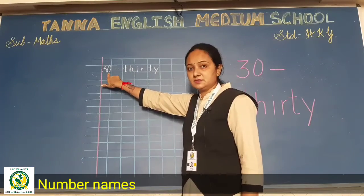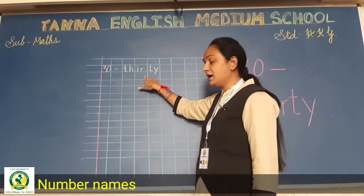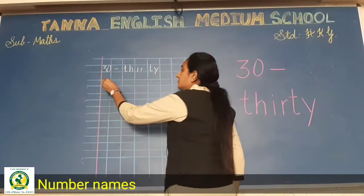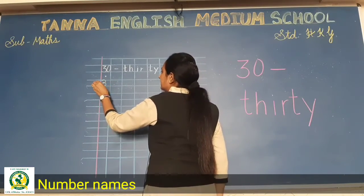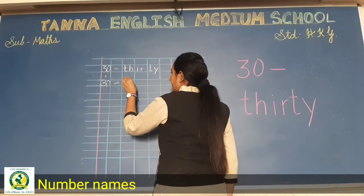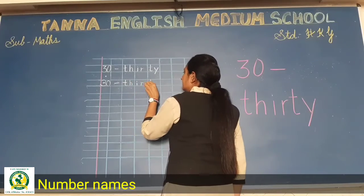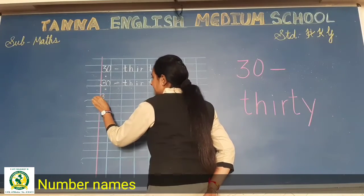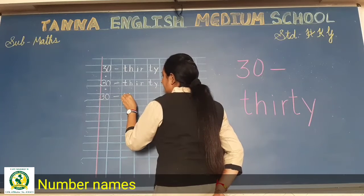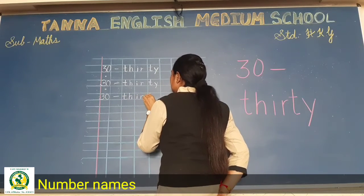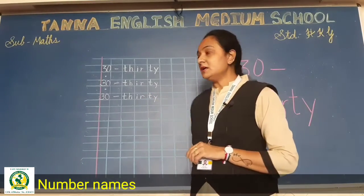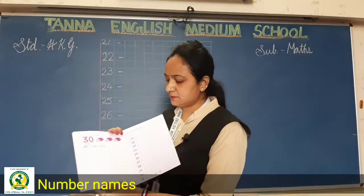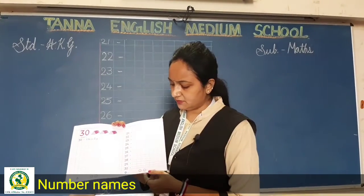30 — thirty — T-H-I-R-T-Y, 30. It is very easy. So let us write now. You have to leave one box and then write thirty: T-H-I-R-T-Y, 30. Write it with good, neat writing. This way you have to complete the whole page.